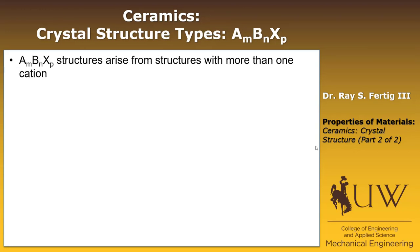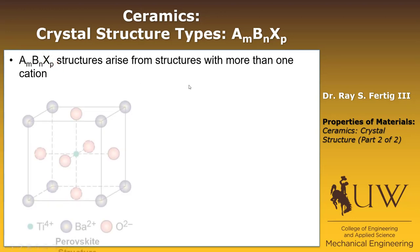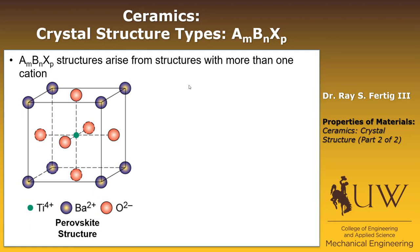As we go to even more complex structures, now we're talking about the AmBnXp type structures, where A and B are different cations and X is still the anion. The one your book talks about is the perovskite structure. The one we're looking at here is for barium titanate — you have barium ions at the corners, oxygen ions at the faces, and a titanium ion at the center. These are actually a really interesting class of materials with respect to a lot of recent development in solar cells.